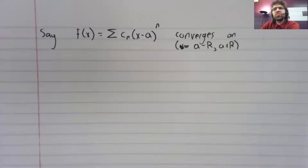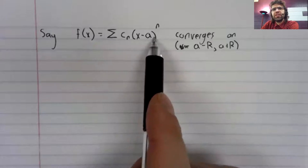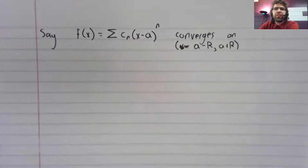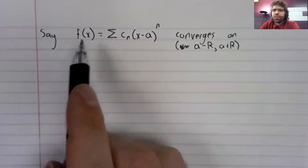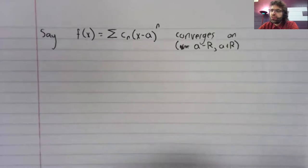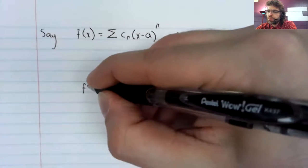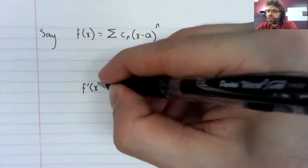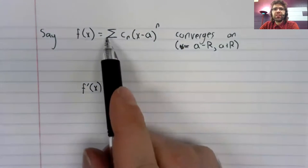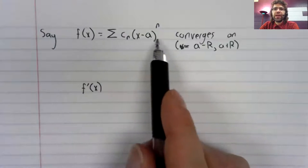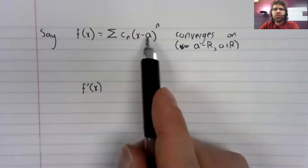Say that we use a power series to define a function. We've mostly been using power series centered around zero, but it could be centered anywhere. This function is differentiable. So any function that can be expressed in this way does have a derivative.